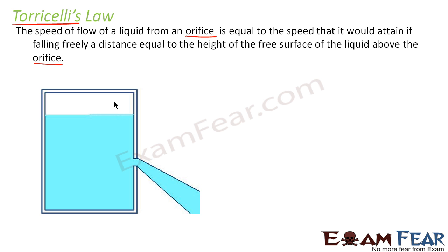Let us consider you have a vessel which contains some fluid. You have a very small slit, and the fluid starts flowing through this slit. Torricelli's law states that if a fluid is flowing through this slit in a closed container, then the speed with which this liquid will flow is equal to the speed with which a freely falling object falls — where the height from which the object falls equals the height of the slit from the free surface of the liquid.